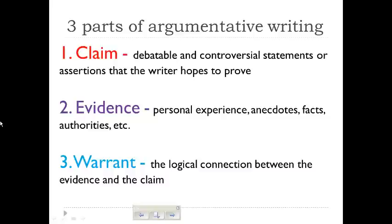The third part is something called a warrant. You may have heard that word before in our justice system, but it's a little different here. The warrant in this model is a logical connection between the evidence you're using and the claim you're making. You want to make sure your warrant is really strong and clear to your reader. A lot of people are good at figuring out a claim and finding evidence, but the warrant is really crucial — it ties that claim and evidence together.